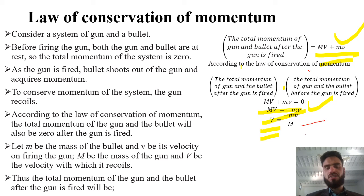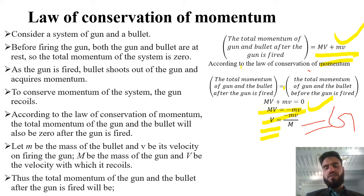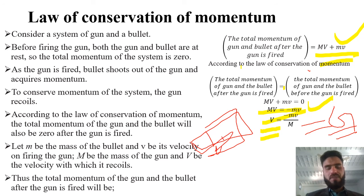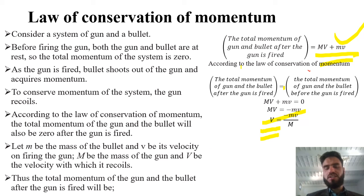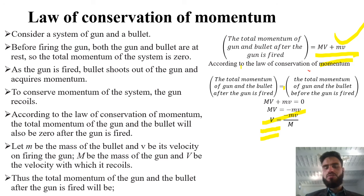Rearranging and solving, what is this capital V? This V denotes the velocity of recoil. What is the velocity of recoil? It is the jerk when the gun is fired — the gun will push back the man, or you can say the device, backward. This is the recoil velocity of the gun.